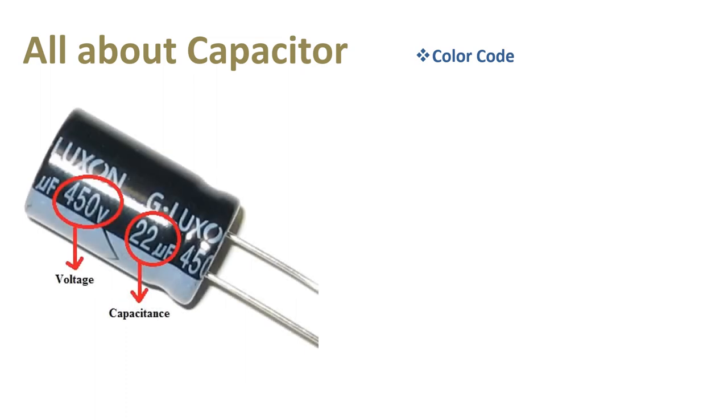Value of capacitance and its working voltage is written on electrolytic capacitors. And in ceramic capacitor there is a code which gives the value of capacitor. For example, 104 means 10 multiplied by 10 to the power 4, which equals 100,000 picofarad or 100 nanofarad.